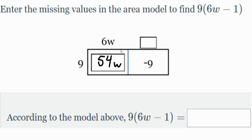And now we see 9 times what? 9 times what gives us negative 9. So if we want to, we can just take negative 9, divide that by 9. Remember the inverse operations here. So negative 9 divided by 9. That'll give us negative 1. There we go. So according to the area model above, this right here is going to be equal to 54w minus 9. So 54w minus 9.